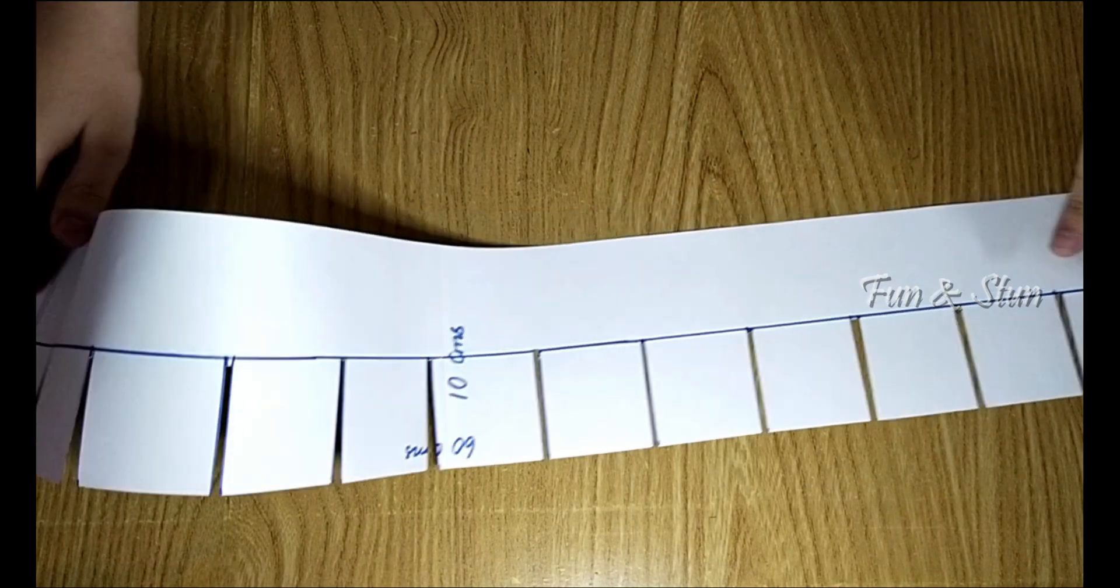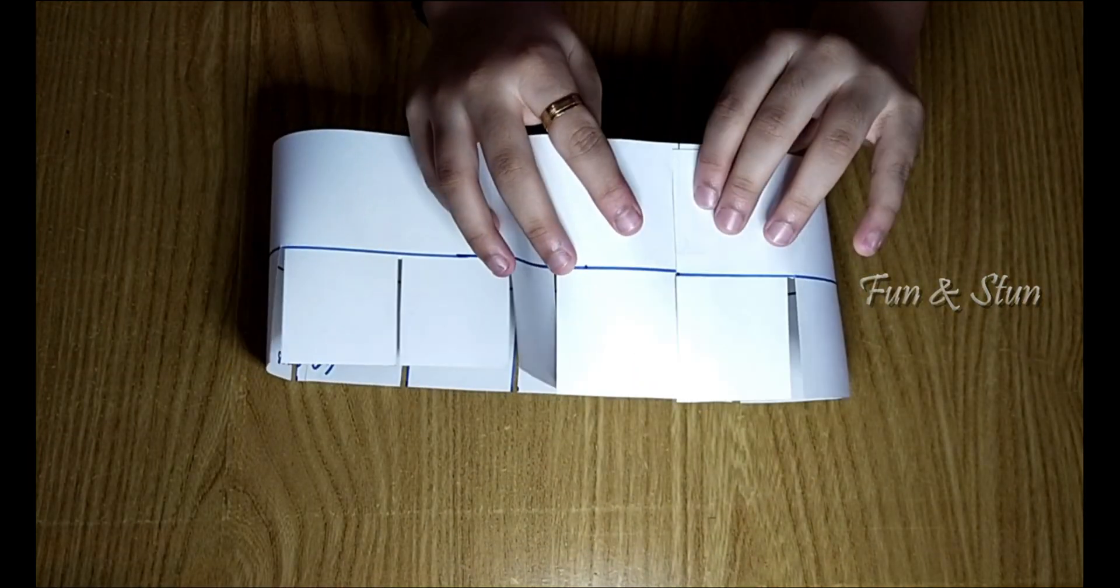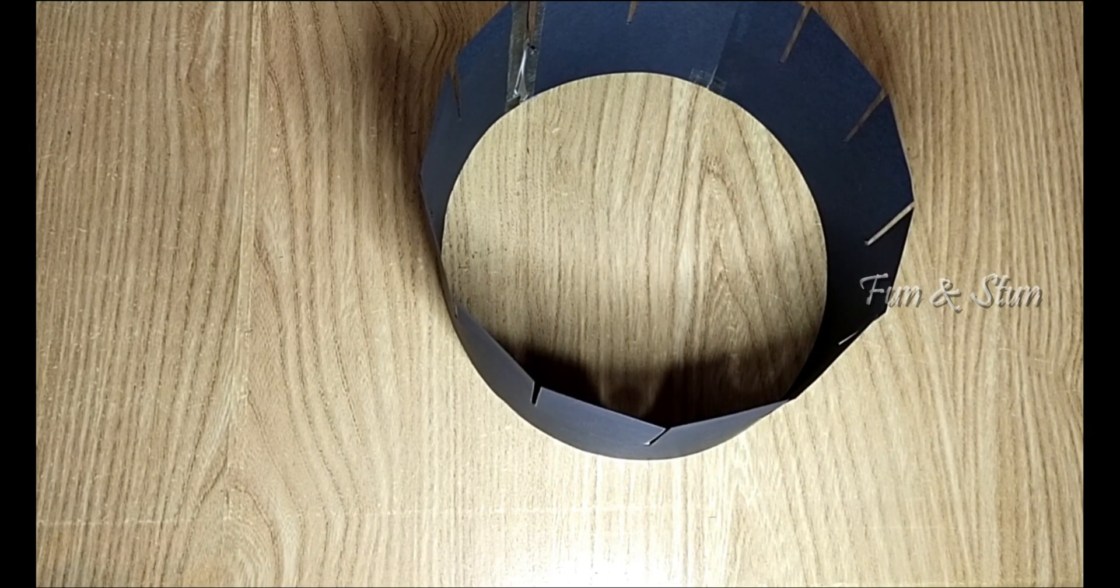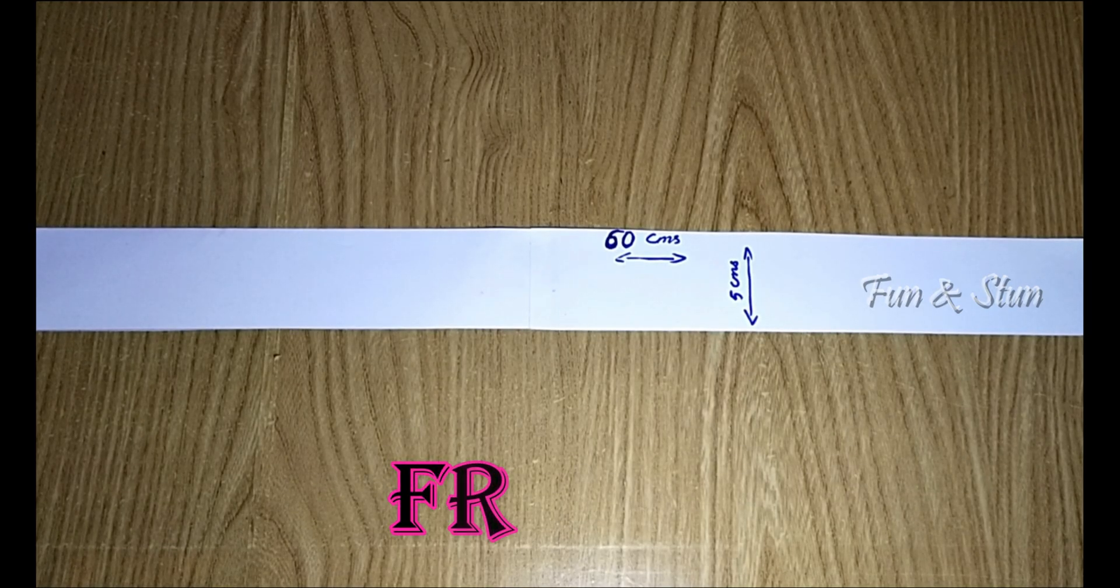After cutting the slits, stick the edges together to form a drum. I have already made a drum with black chart paper. Now let's move on to the frame making section.